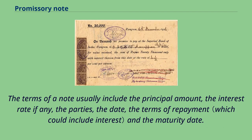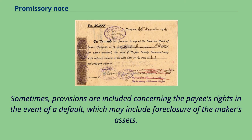The terms of a note usually include the principal amount, the interest rate if any, the parties, the date, the terms of repayment, and the maturity date. Sometimes provisions are included concerning the payee's rights in the event of a default, which may include foreclosure of the maker's assets.